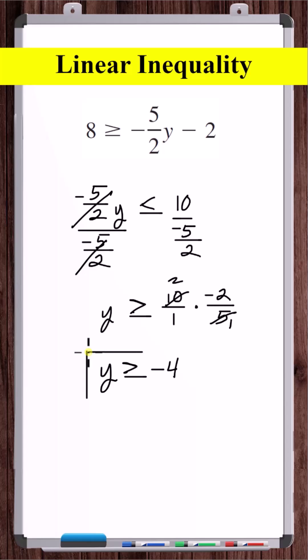So the answer is y is greater than or equal to negative 4, which means that if you plug any y value into this expression that is greater than or equal to negative 4 and simplifies, what you'll get will always be less than or equal to 8.